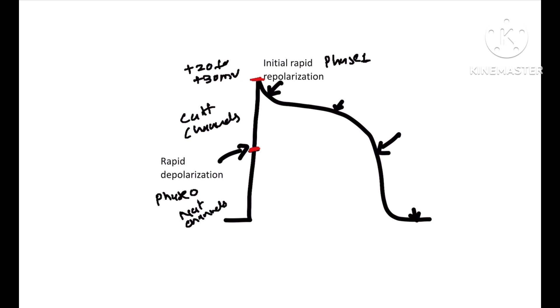This is due to closure of sodium channels and opening of potassium channels, which causes movement of potassium ions outside. It causes transient outward current.